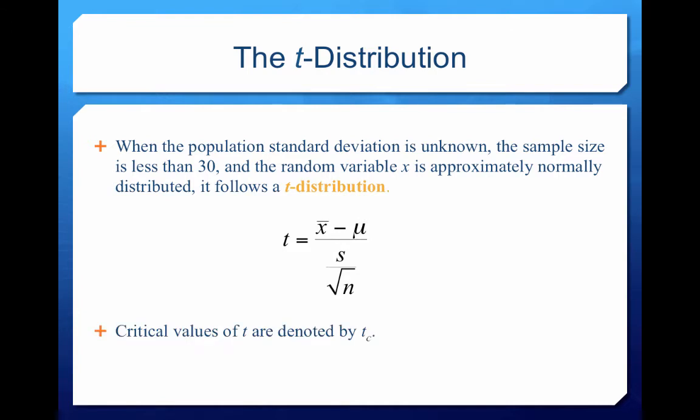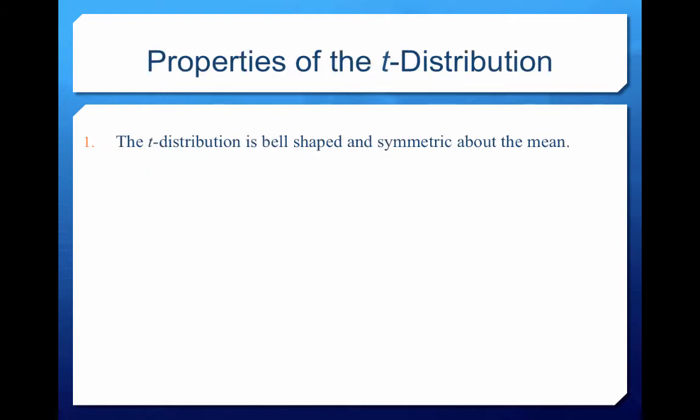You'll often see critical values of t denoted by t with a little subscript c. We'll be primarily working through Excel, but it'll be very similar to z. Z's are from a normal distribution, whereas t's come from a t-distribution.